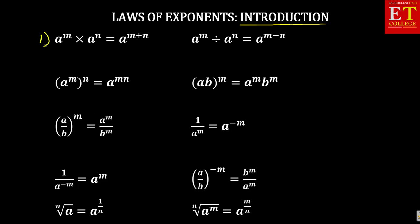The first law, which is the most common and simpler, states that a to the power m times a to the power n is equal to a to the power m plus n. So what it is saying is: when the bases are the same and there is a multiplication sign, you must add the exponents. When you see a multiplication sign with the same base, you add the exponents.